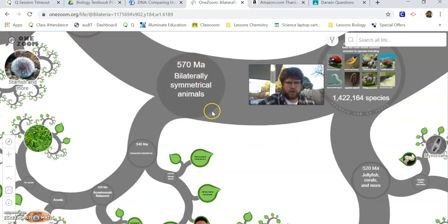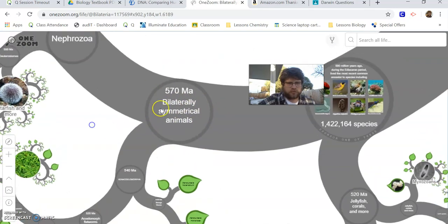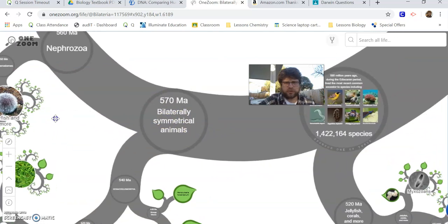And this tree, it's neat. It shows you when different types of organisms evolved from each other. So at 570 million years ago you have bilateral symmetry in animals. So that means that our one half is the same as the other half.